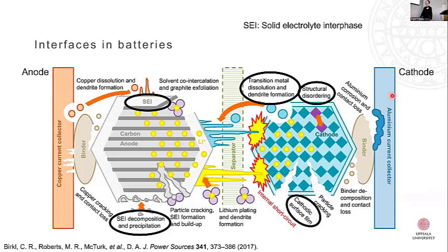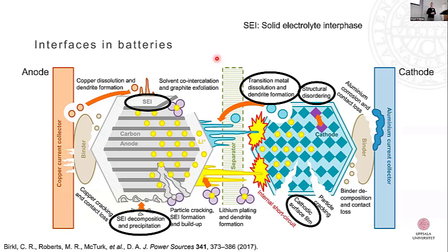Here is a slightly more complex view focusing on the interfaces inside the battery. On the left side we have the anode, and one of the most important interfaces is between the anode and the liquid electrolyte. When we experience very reducing potentials at the anode, we form what's known as the SEI — the solid electrolyte interface — which is a collection of electrolyte decomposition products forming a solid layer on the carbon anode. You have something similar forming on the cathode at higher potentials, which we often refer to as the cathode-electrolyte interface.